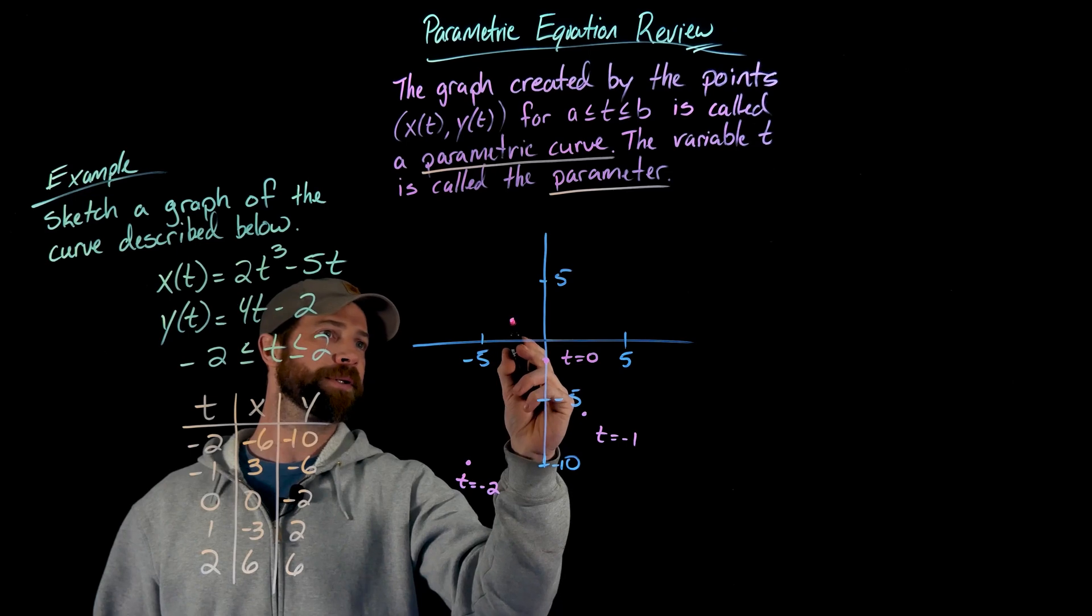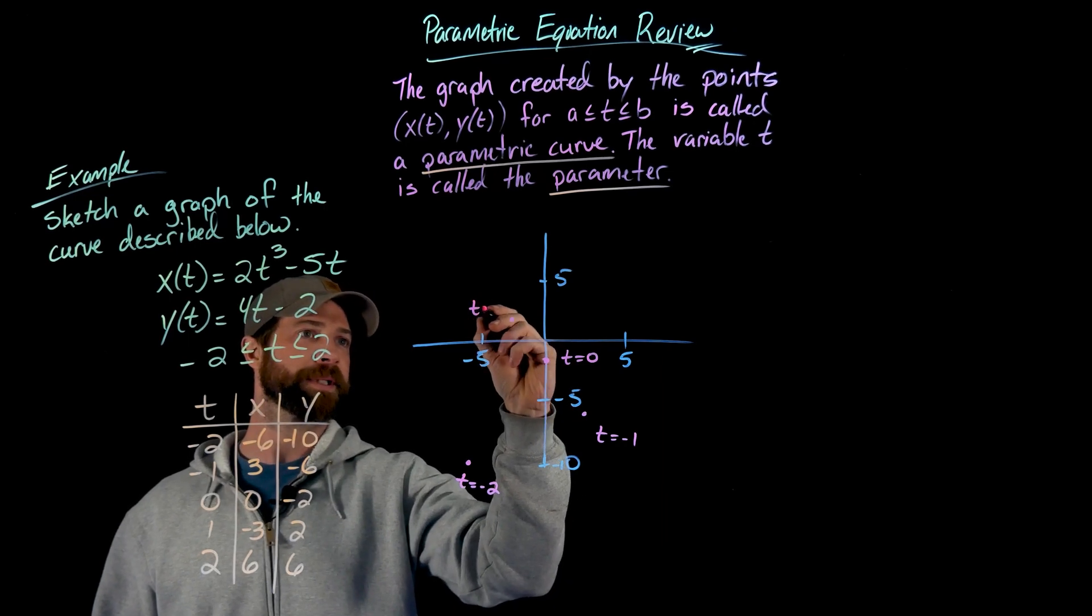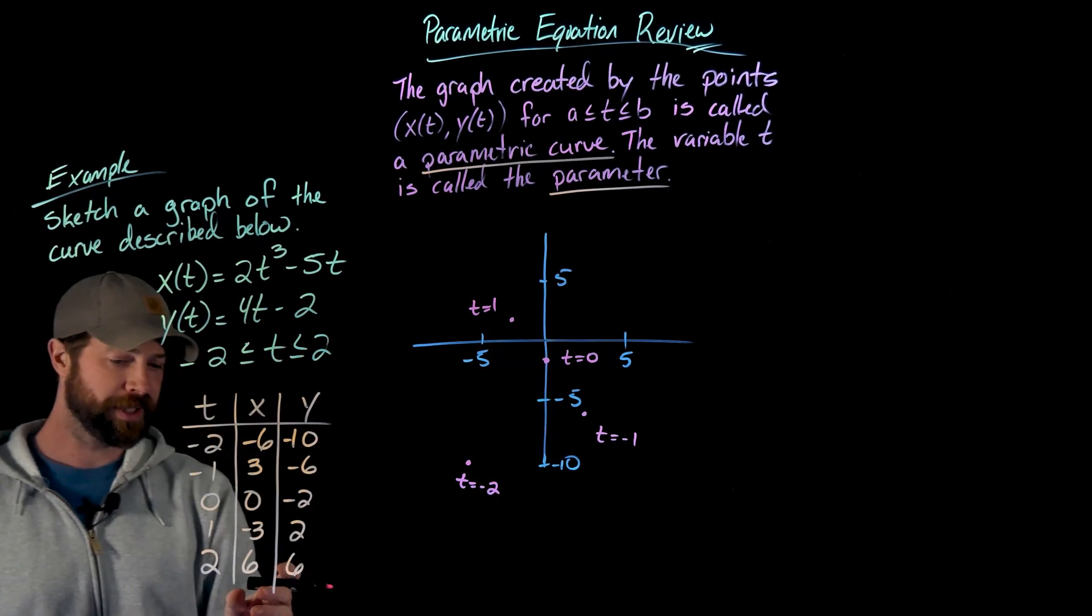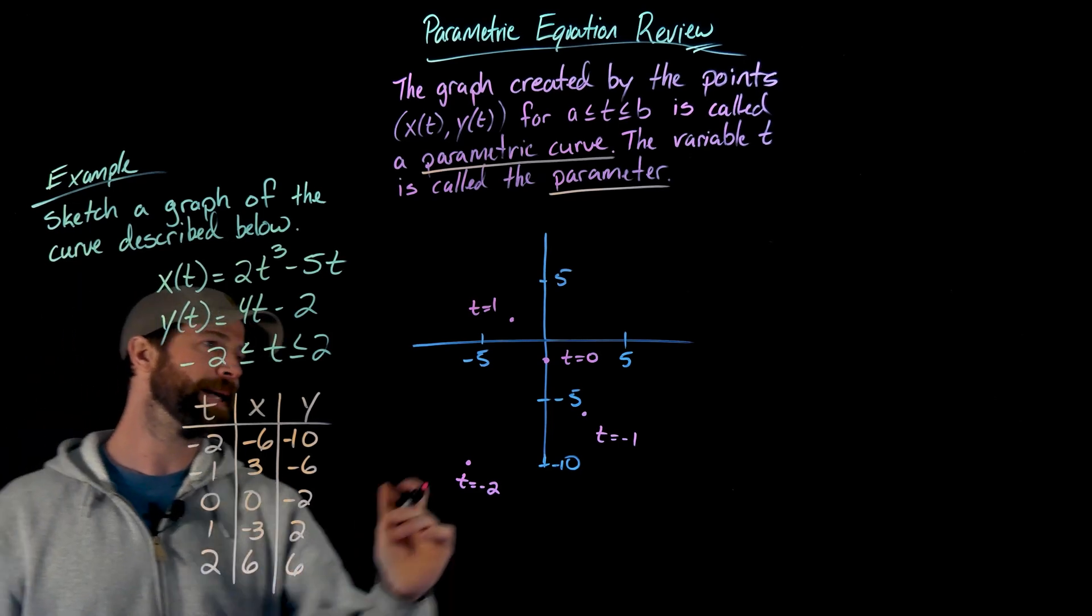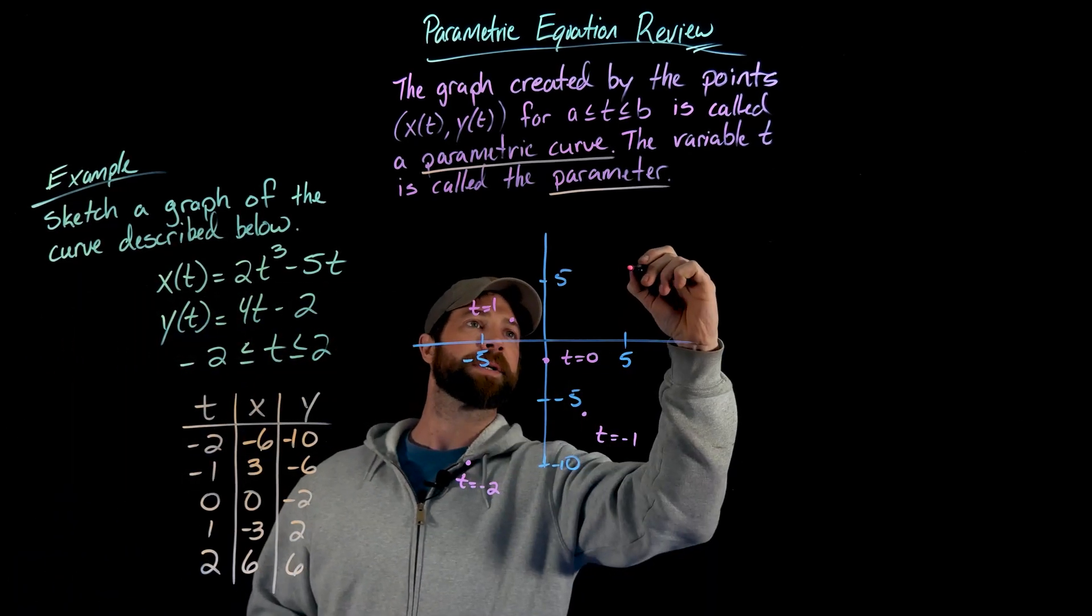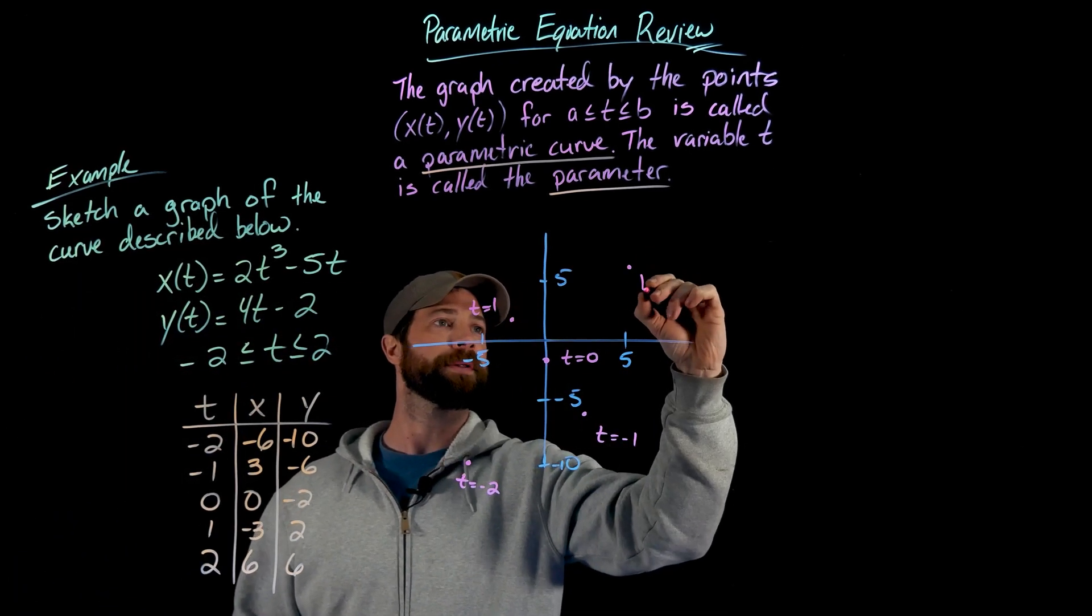For t equal to one I'm at negative three, two. So negative three and two, that's about right there. That's when t equals one. Finishing up with when t equals two, I'm at six, six, and so that will be somewhere right there.